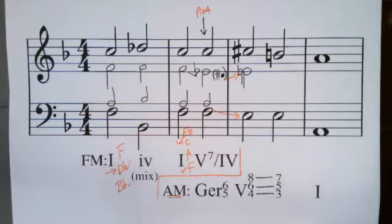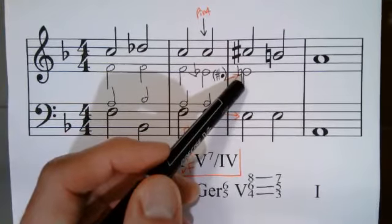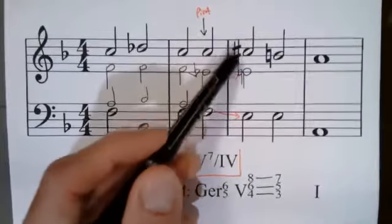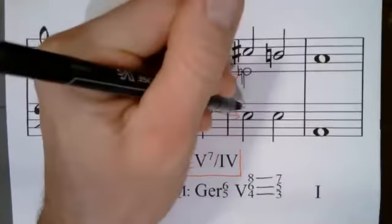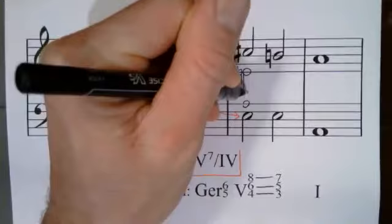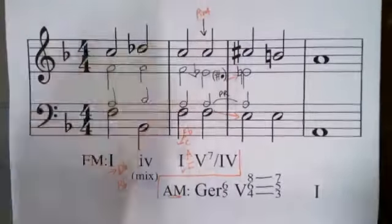So now we can just follow the figured bass. We have a sixth above the bass here. Sorry, here. You have an octave above the bass here. And so now we just need a fourth, and we can put that in the tenor. That's also a preparation for that dissonant note, so that works out well.